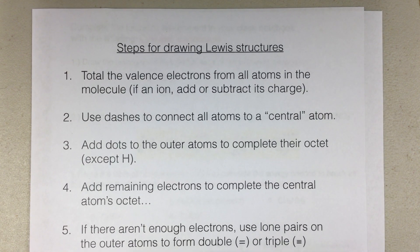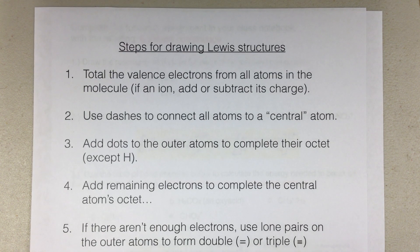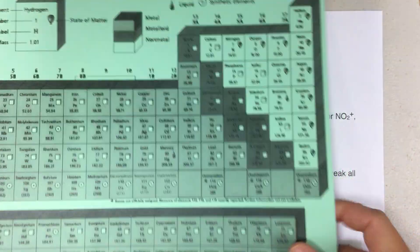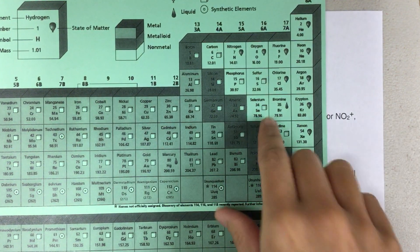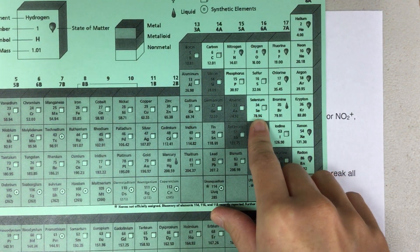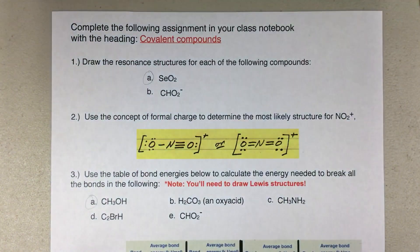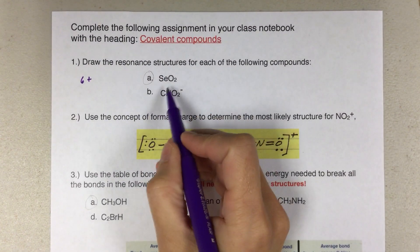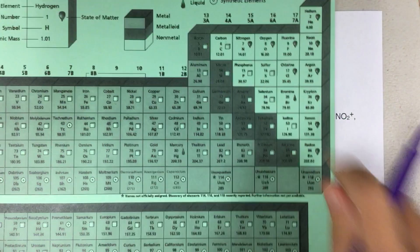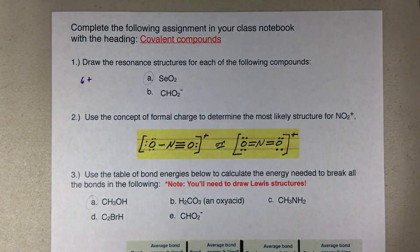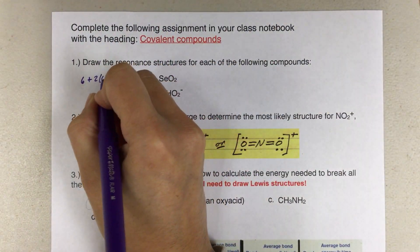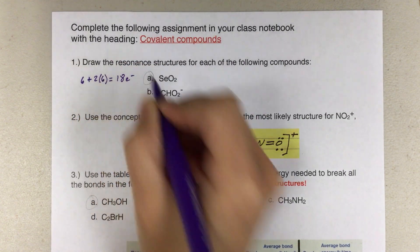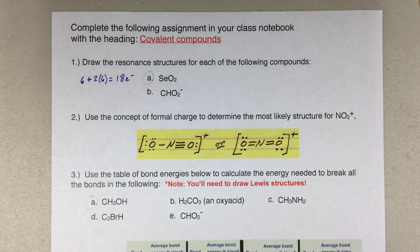I have selenium first in the formula, and according to our periodic table it gives 6 valence electrons. Oxygens also give us 6 valence electrons, but we have 2 of them. So that's going to give us a total of 18 electrons. Keep that in mind when we're drawing our Lewis structure.